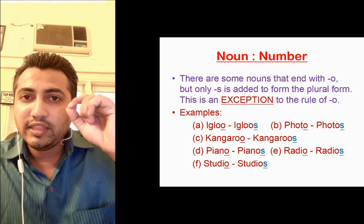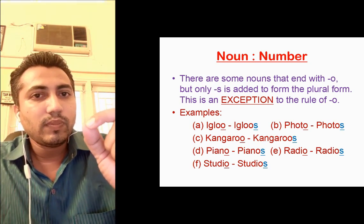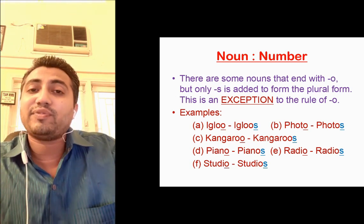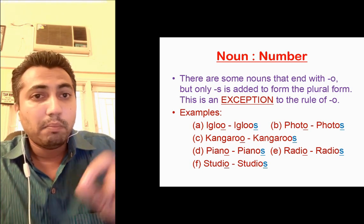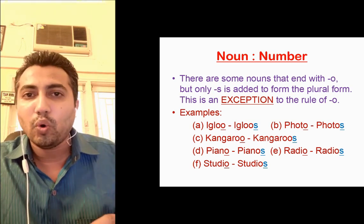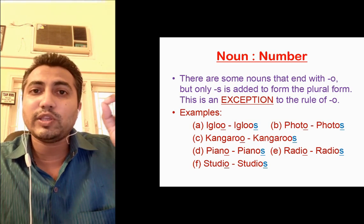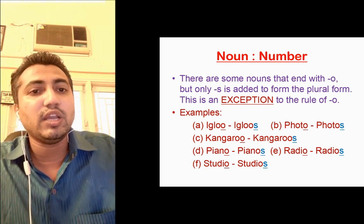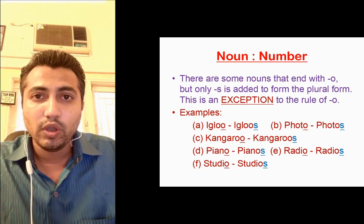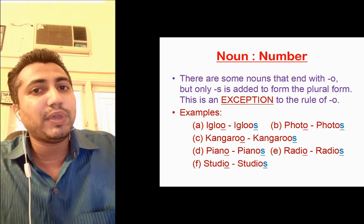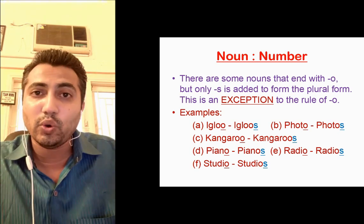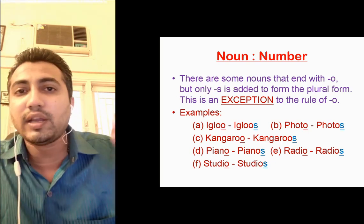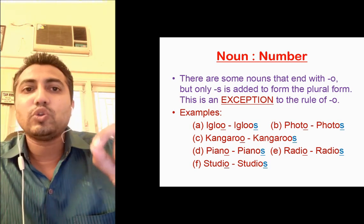The next rule is that there are some nouns which end with 'o', but still to convert them into plural we only add 's'. The previous rule told us that if a noun ends with 'o' we add 'es', but this rule is an exception. For example: igloo becomes igloos, photo becomes photos, kangaroo becomes kangaroos, piano becomes pianos, radio becomes radios, studio becomes studios. All these end with 'o' but we are only adding 's', not 'es'. This is an exception to the rule of 'o'.